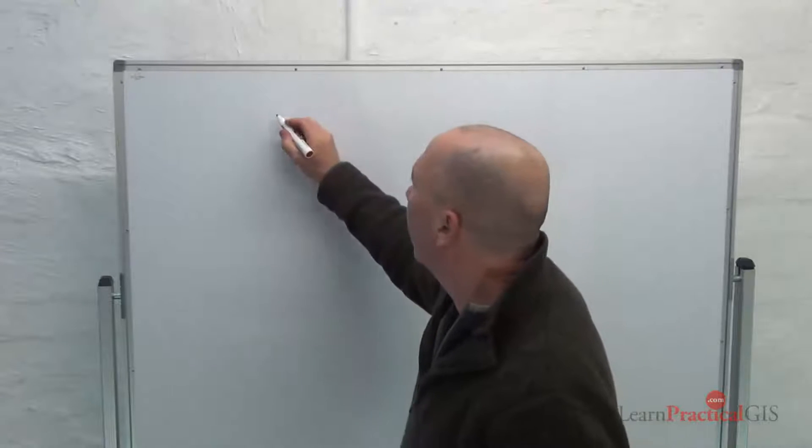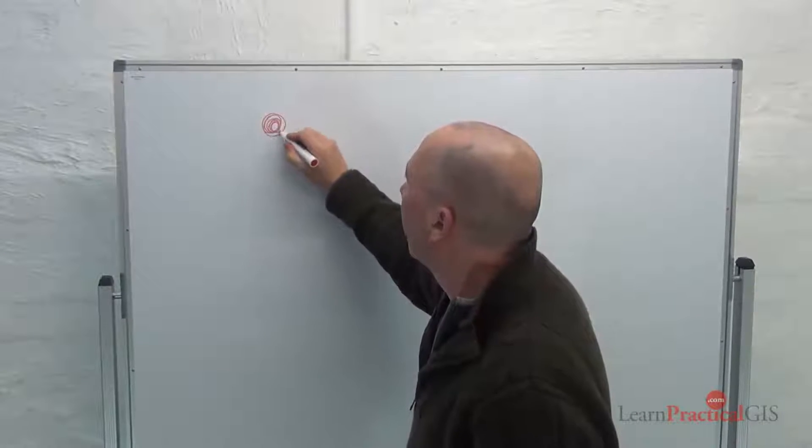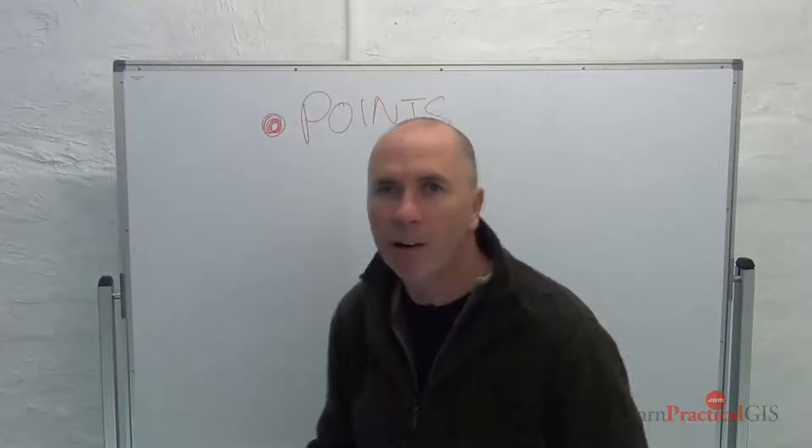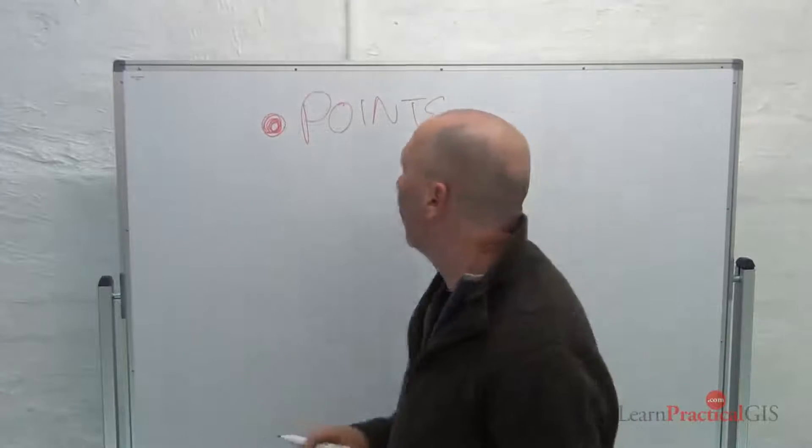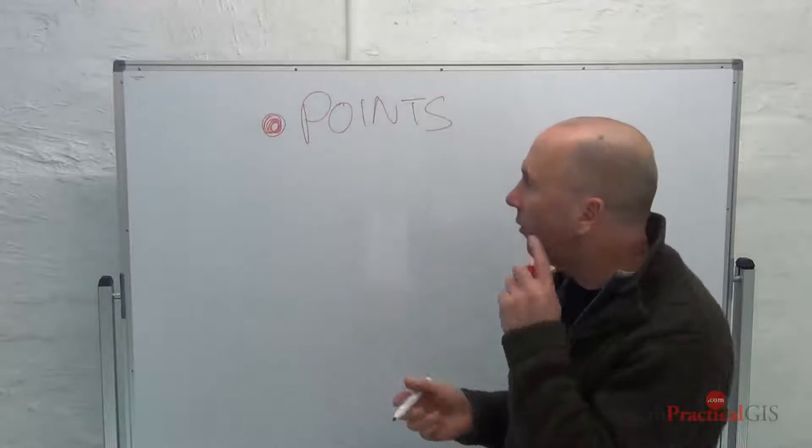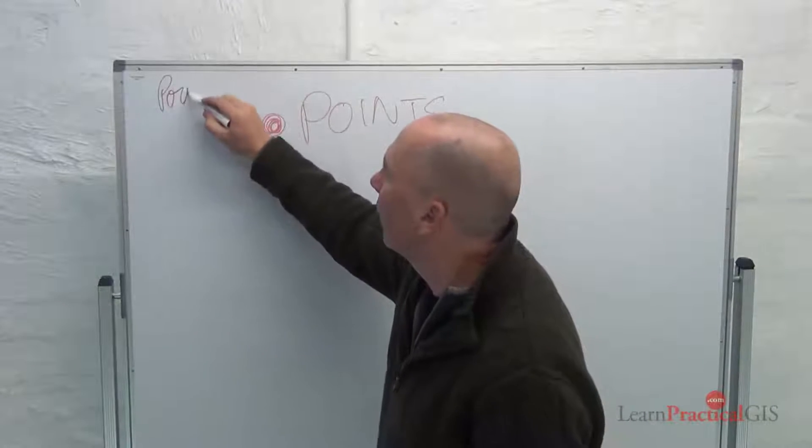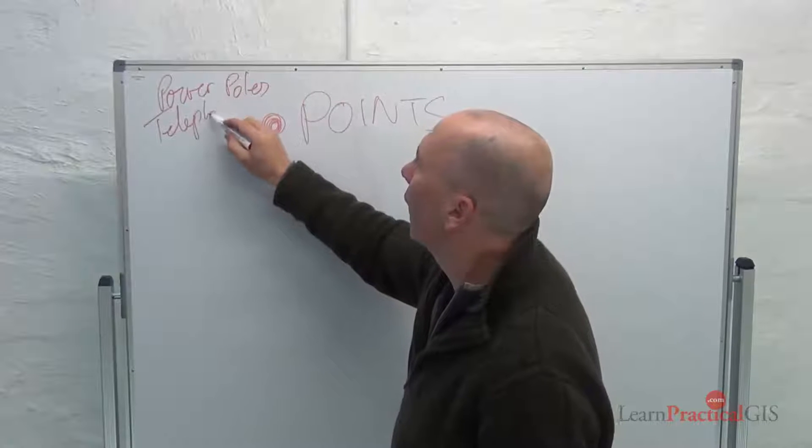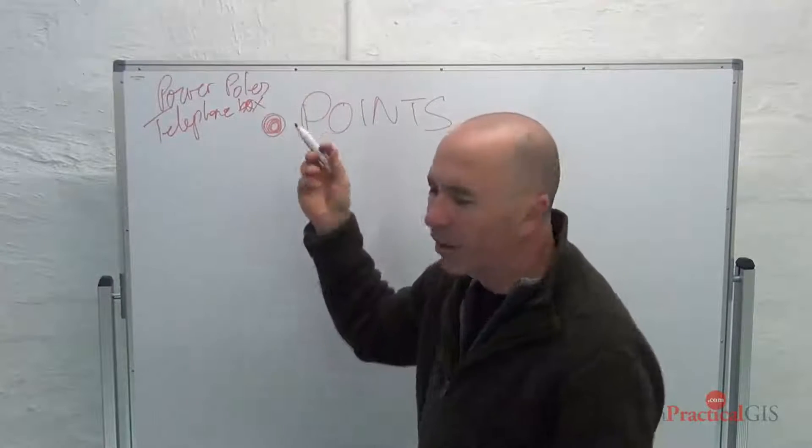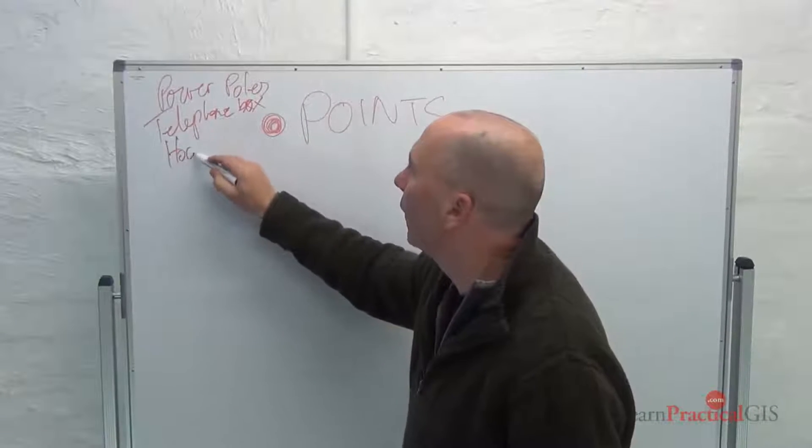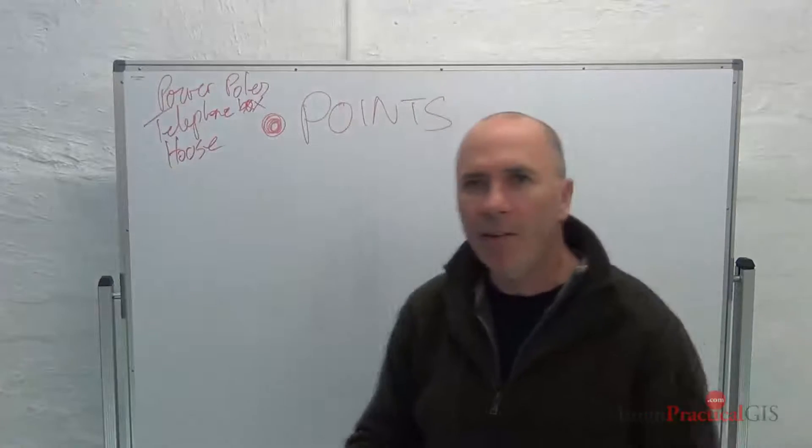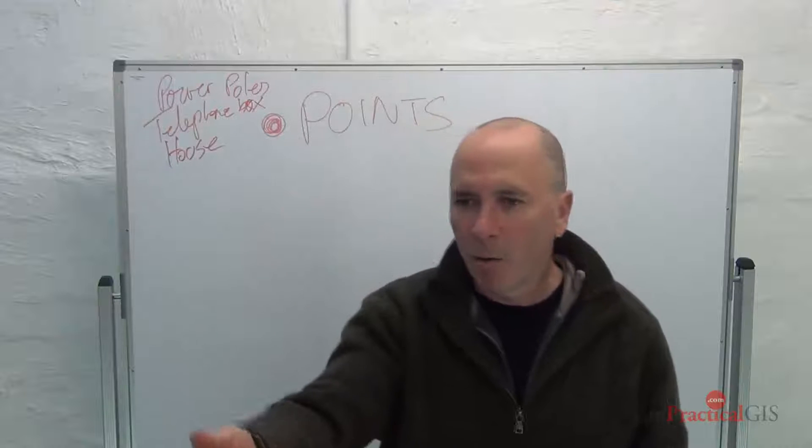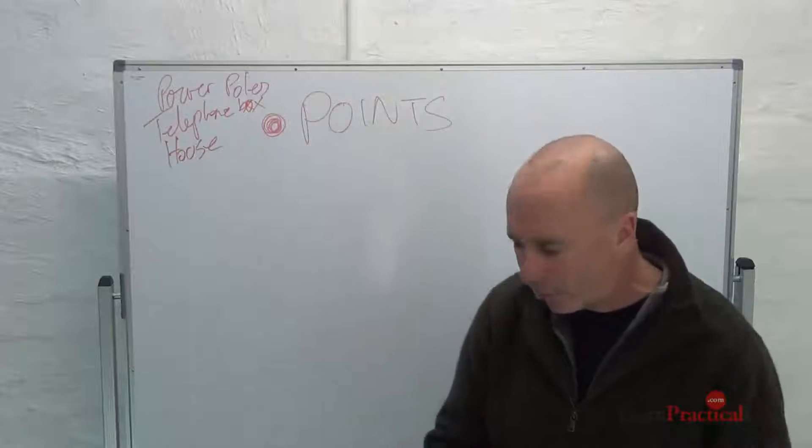Three data constructs in a GIS. We have points. It's my rickety board, okay? Can you see that? Points. Yes. Behind there. Points are things like power poles, telephone boxes, telephone box and a house. They're things that you can go up to with a global positioning system and go whack. Ba-ting! They're in there. We can map them that way.